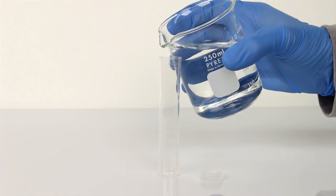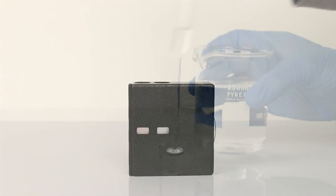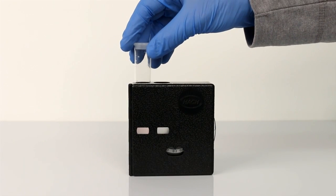Fill the viewing tube to the 5 ml mark with the blank sample. Place the tube in the top left opening of the color comparator.